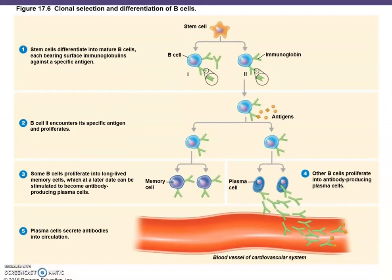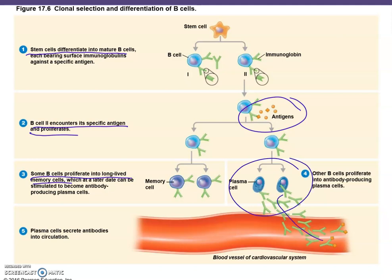The steps of clonal selection and differentiation of B cells start with stem cells that differentiate into mature B cells. Then the B cell encounters a specific antigen and proliferates — it starts dividing in a mix-and-match process to make the right antibody. Some B cells proliferate into long-lived memory cells. After the infection is done, plasma cells that are actively secreting antibodies by the thousands are no longer needed; we generate long-lived memory cells. If you ever see the same antigen again, memory cells can be quickly converted back into antibody-producing B cells.